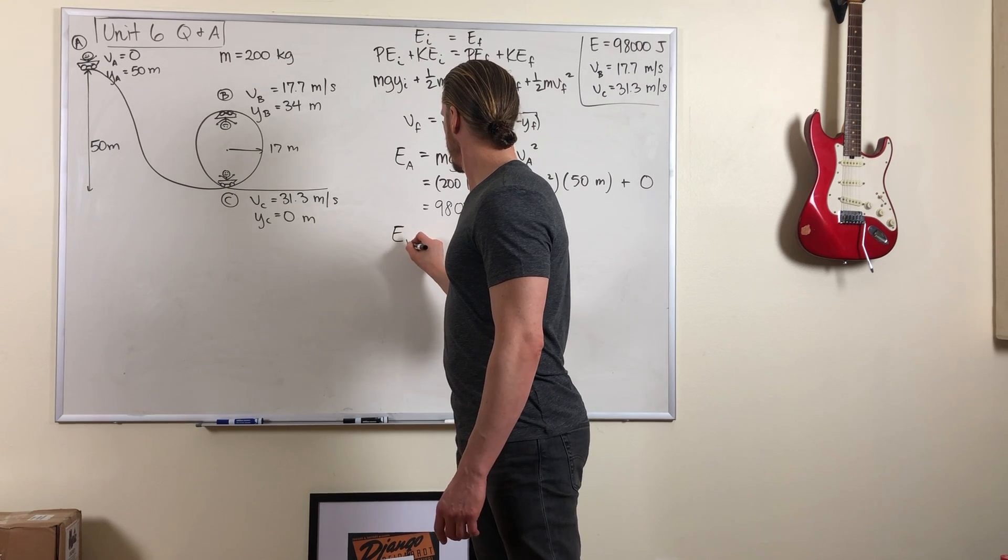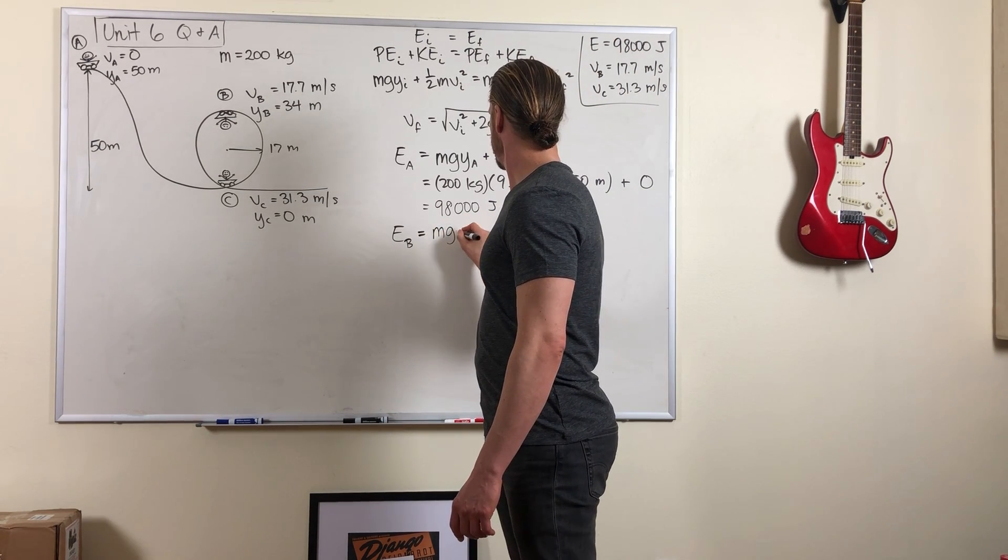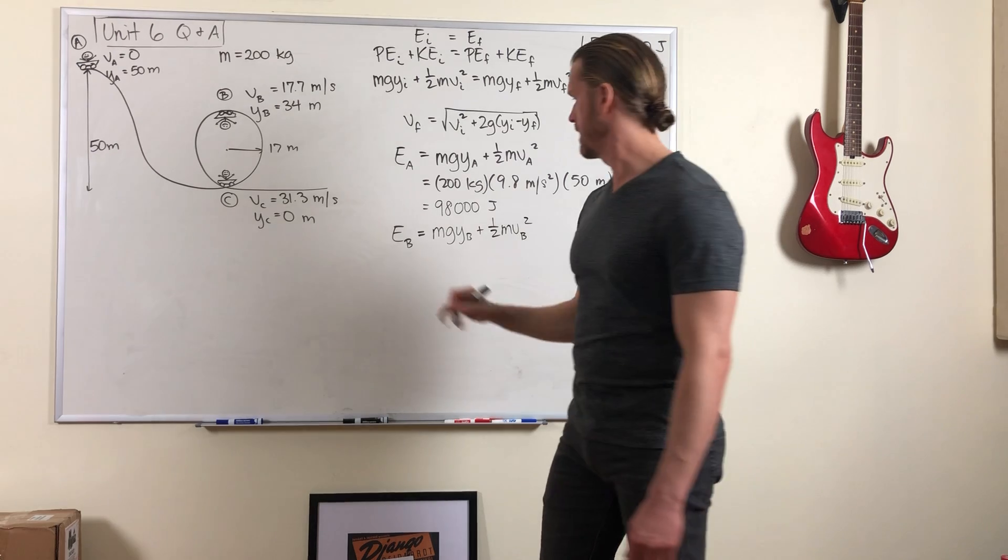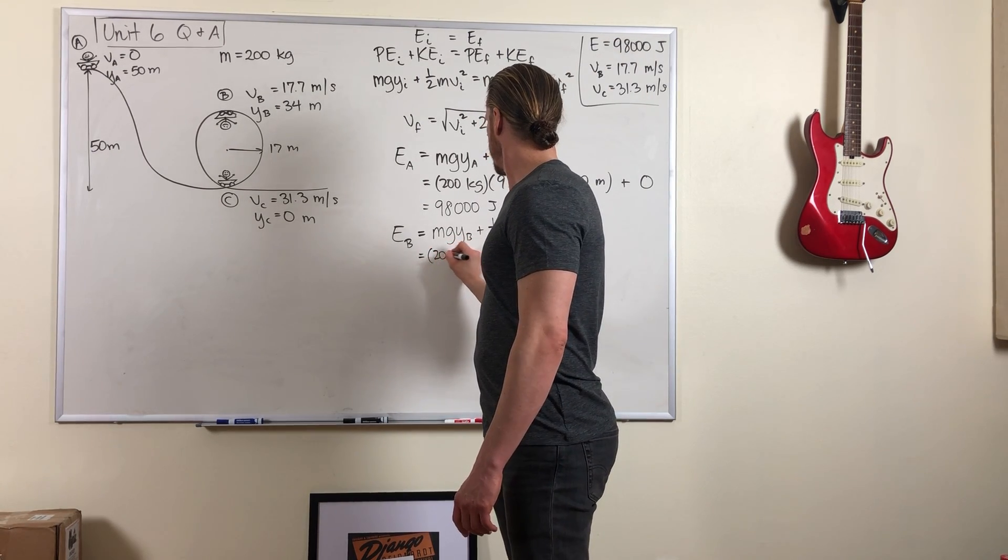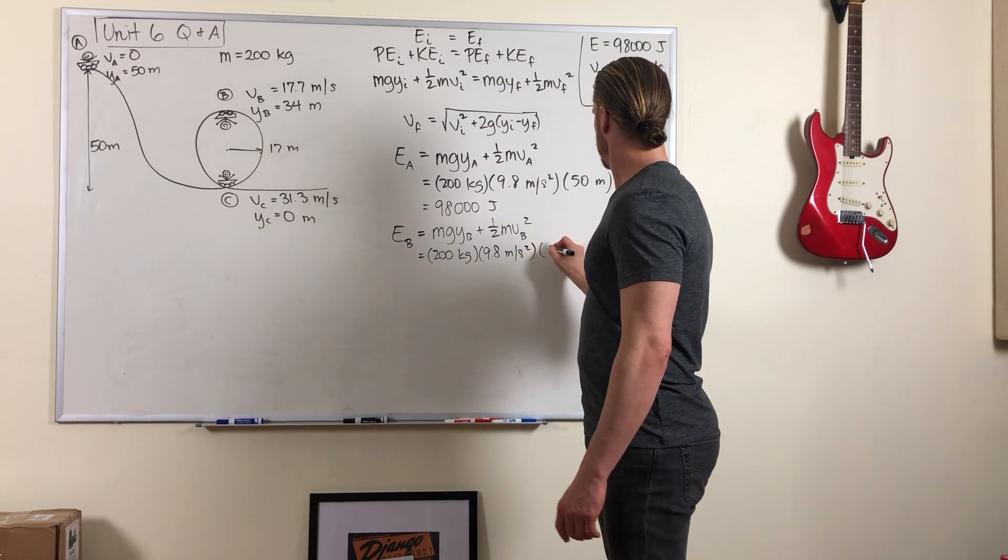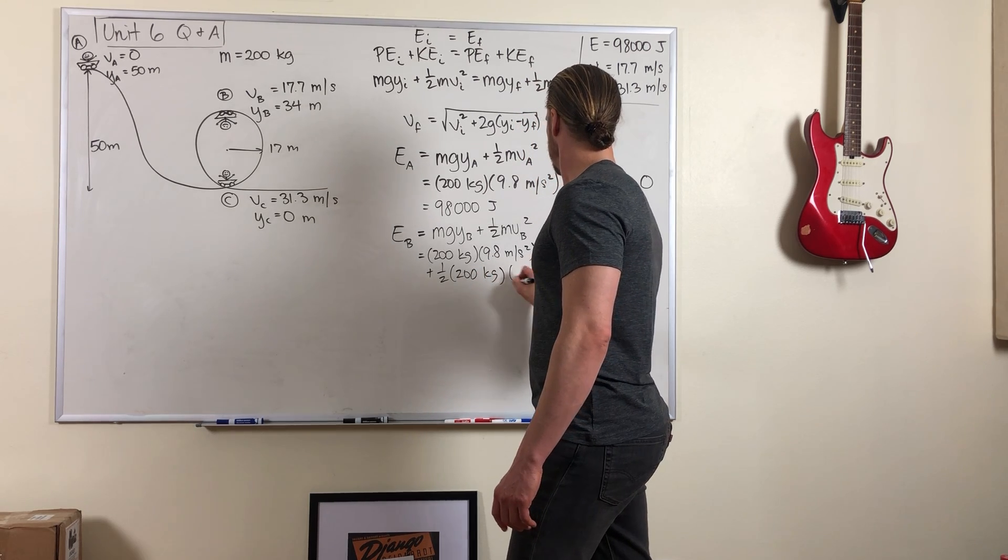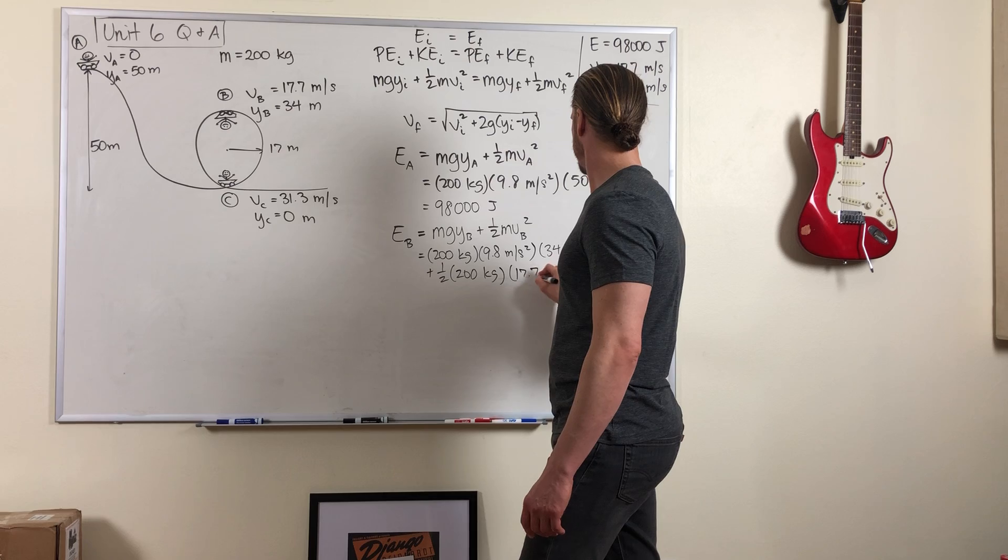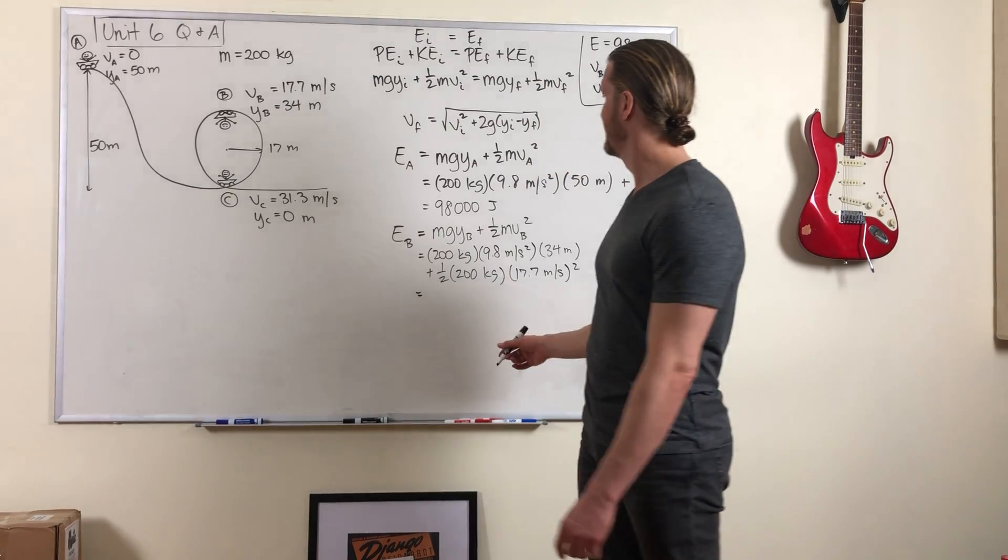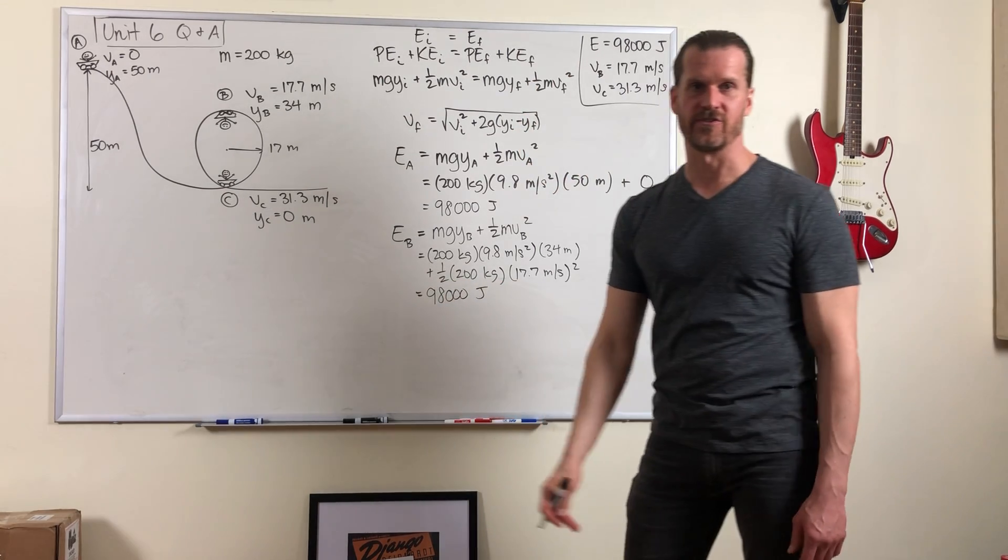What if we find the total energy at point B? MGY_B plus one half MV_B squared. Well, 200 kilograms, 9.8 meters per second squared, 34 meters plus one half 200 kilograms times 17.7 meters per second quantity squared. And guess what? When you type all that in, it gives you the same number. That's what we mean by conservation of mechanical energy.